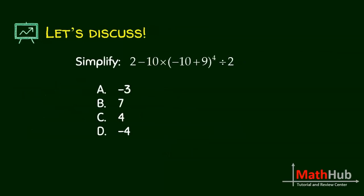Another order of operations problem, but this time it already involves exponent. So let us recall, we have PEMDAS. So we start with the parenthesis. 2 minus 10 times, negative 10 plus 9 is negative 1, then copy. Class, it's important that you write down organized solution so that when you have time and you can still review your answers, you just need to read your solutions.